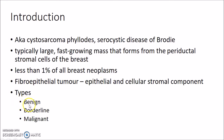Phyllodes Tumor is mostly a benign tumor. However, it can be divided into 3 types depending on the malignancy: benign, borderline, and malignant. We can call a Phyllodes Tumor borderline or malignant depending upon the mitotic activity, cellularity, and infiltration at the edge of the tumor. But remember, Phyllodes Tumors are mostly benign.